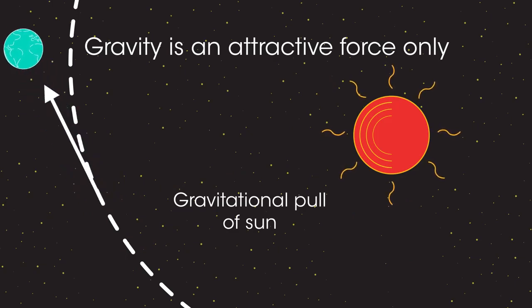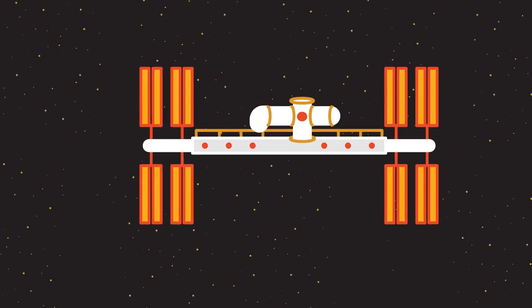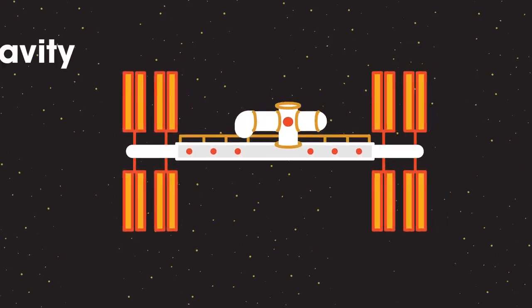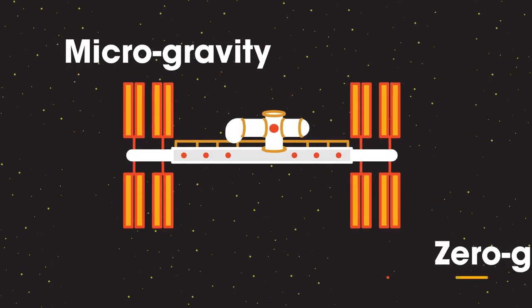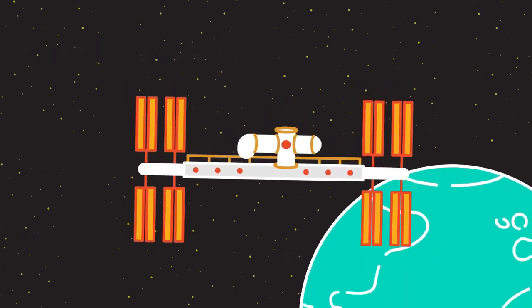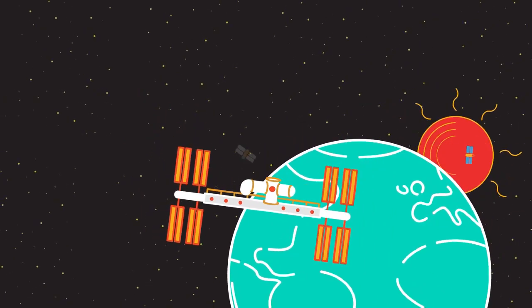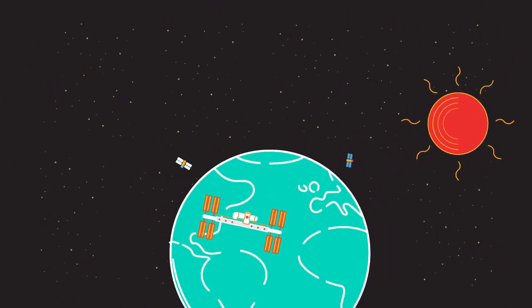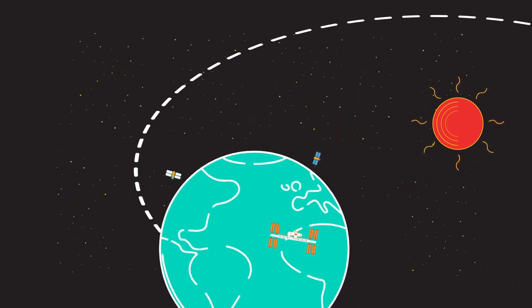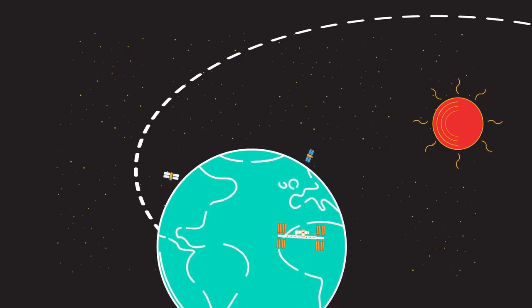People often explain weightlessness in the space station as caused by the lack of gravity and talk of microgravity or zero gravity. But the space station is orbiting the earth like the earth orbits the sun. It's the gravitational force between the earth and the space station that keeps it and all the objects in it in Earth's orbit.